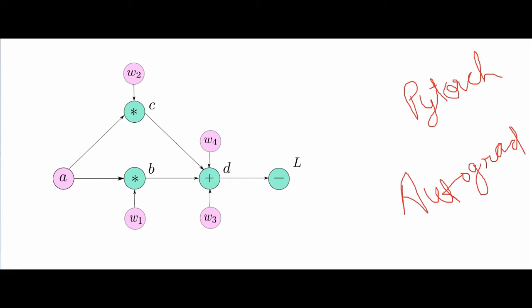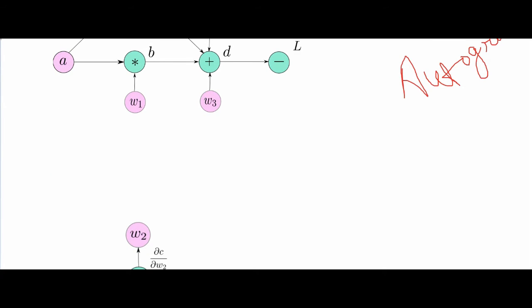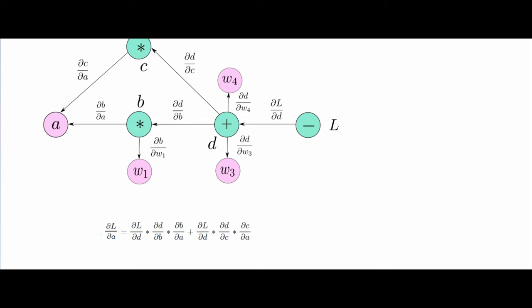Like we need to calculate, for example, this derivative of L with respect to A. We can write every derivative on the roots of the graph and we can compute it backwards by searching all the possible paths from L to A and sum the derivatives.